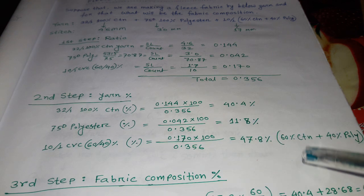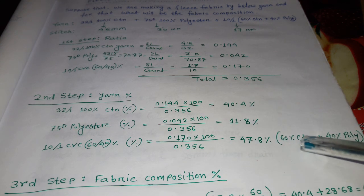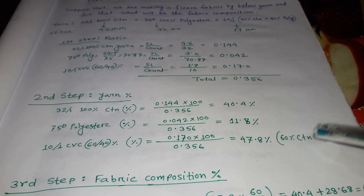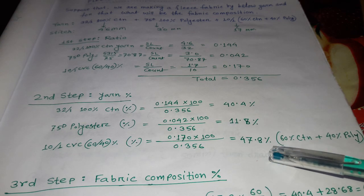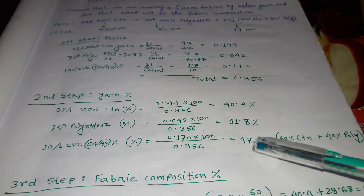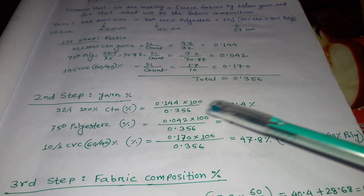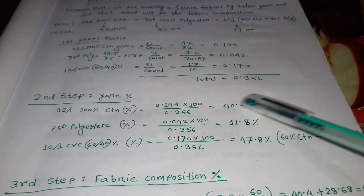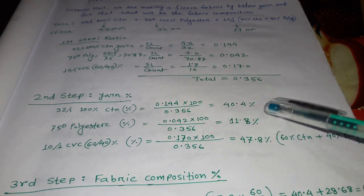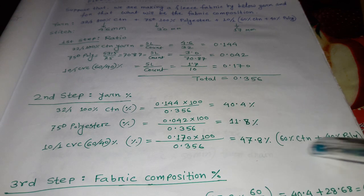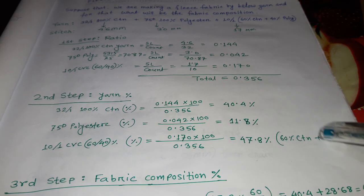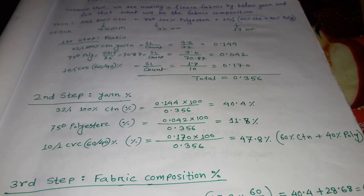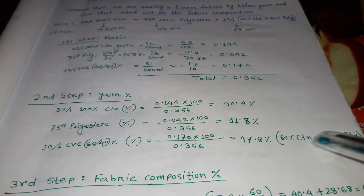Note that the 47.8% is for CVC yarn, which is 60% cotton and 40% polyester. The 40.4% is the 100% cotton yarn percentage, and the 11.8% is the 100% polyester yarn percentage. So we have to calculate the final cotton and polyester separately in the third step.